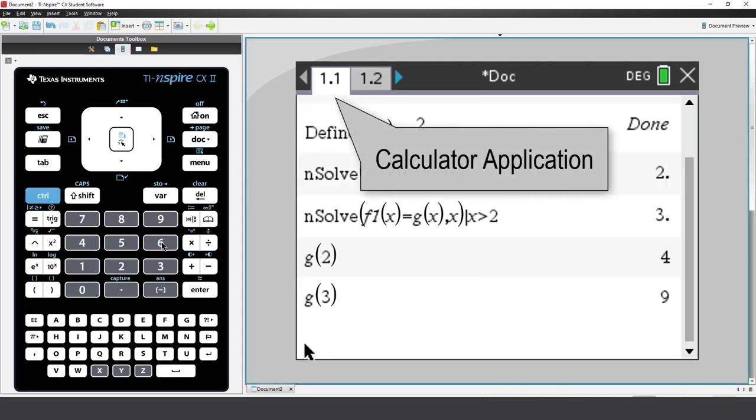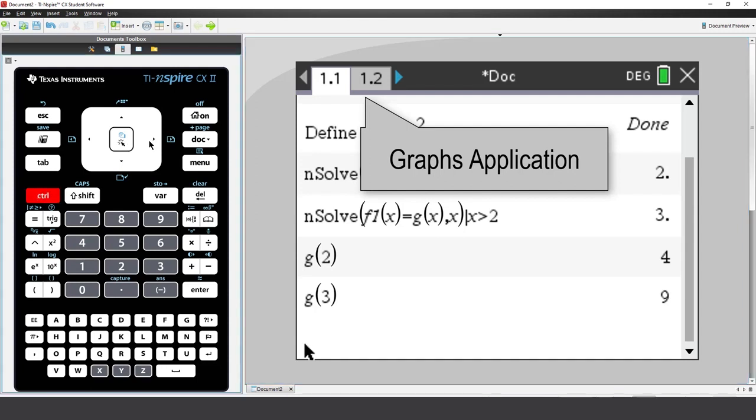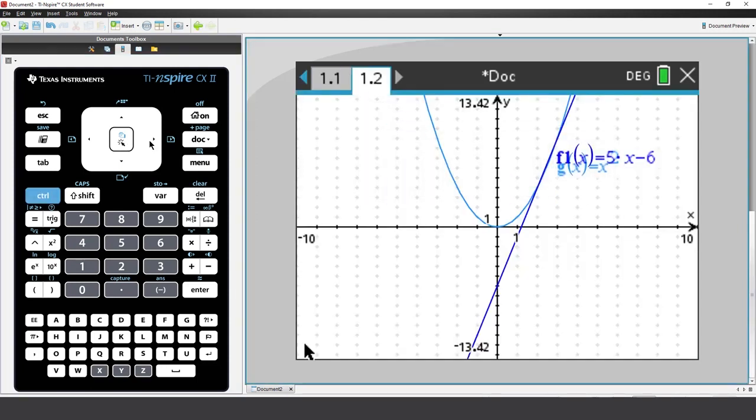The calculator application is now full screen, but notice an additional tab has been added to my document. So, press Control and right arrow, and there we have the graph application in full screen.